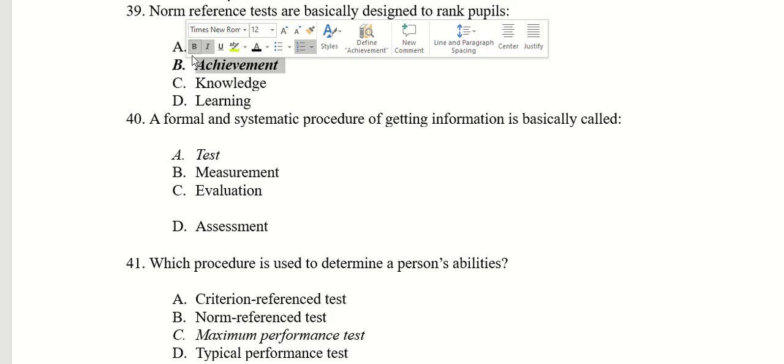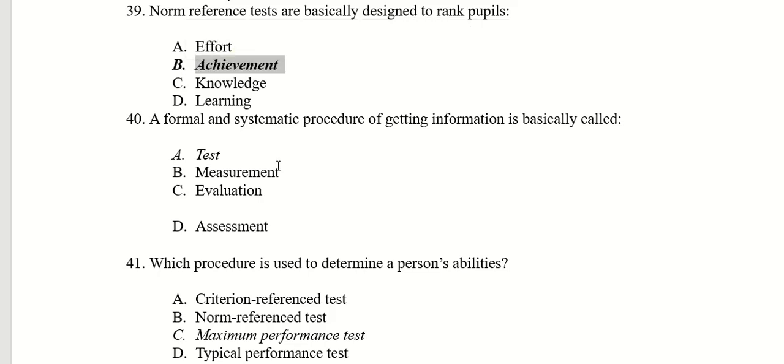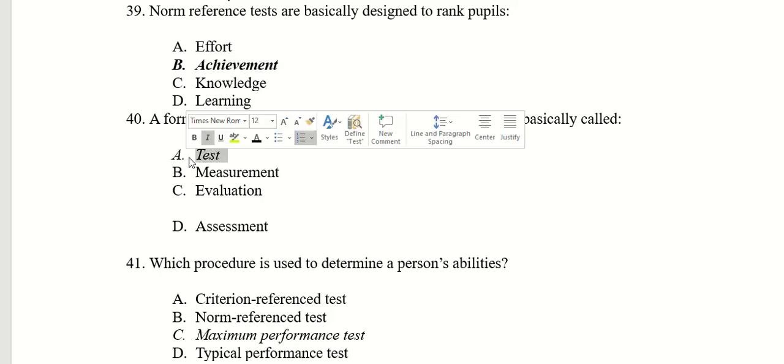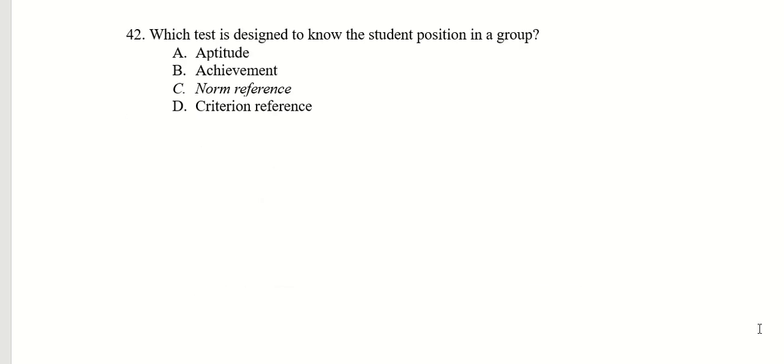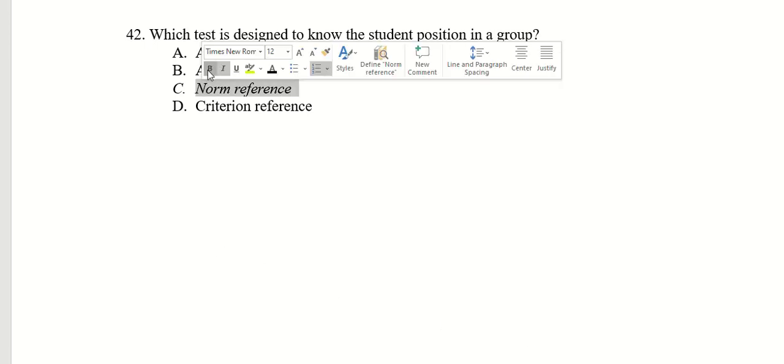A formal and systematic procedure of getting information is basically called test. Which procedure is used to determine a person's abilities? Maximum performance test. Which test is designed to know the student's position in a group? Norm-referenced.